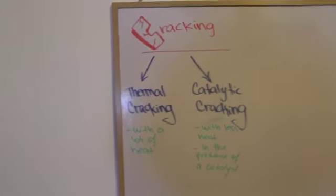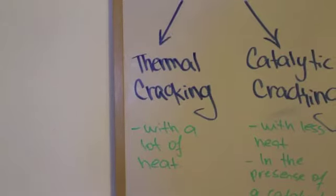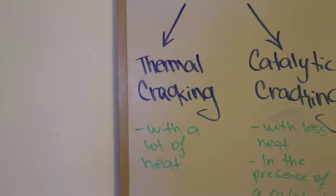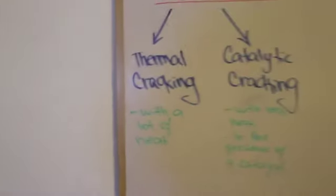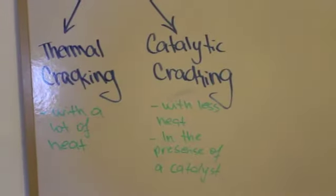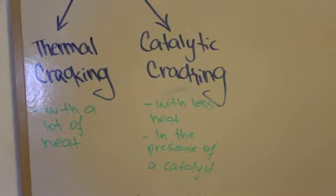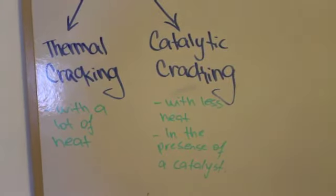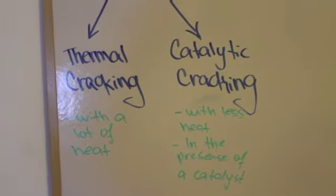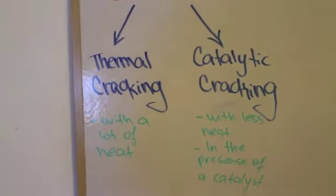There are two types of cracking. The first one is thermal cracking, which means you crack a hydrocarbon using a lot of heat. The second one is catalytic cracking. This is when you use less heat than thermal cracking, but you still use a catalyst to lower the activation energy for the reaction to start.